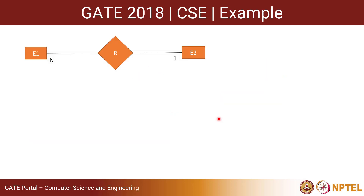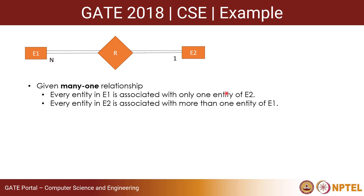Now back to the question. It was given that E1 and E2 are two entities, relation is R, both participate totally, and the relationship is many-to-one. Given that it is a many-to-one relationship, every entity of E1 will be associated with only one entity of E2, because it is a 'one' relationship on the E2 side. And every entity of E2 is associated with more than one entity of E1, but not zero — because participation is total.